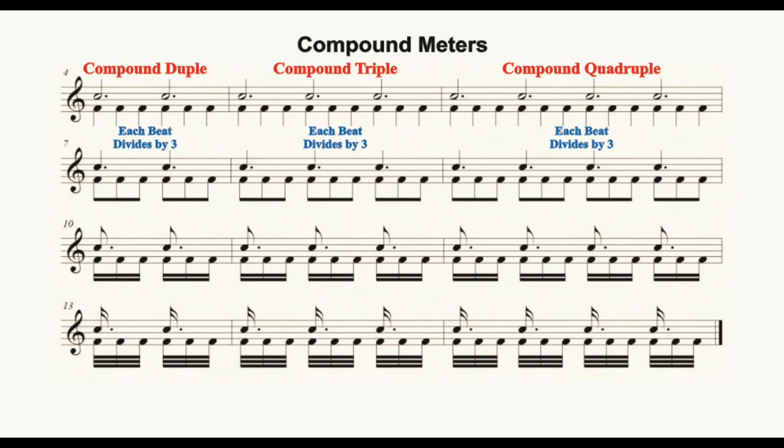Compound meters occur when we divide each beat into three. Because of the way the accents fall in a group of two beats as opposed to a group of three divisions, our ears hear a competition for attention that leads our brains to believe that we are actually hearing two sets of beats.